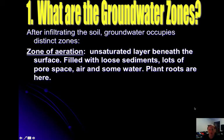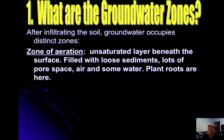The first area it will reach is the zone of aeration. This is the unsaturated layer beneath the surface, filled with lots of loose sediment, pore space, air, and some water. This is where plant roots tend to be. Close to the surface, when water first starts seeping in, you'll find this unsaturated layer — meaning it's not full of water, so there's still plenty of air and pore space.